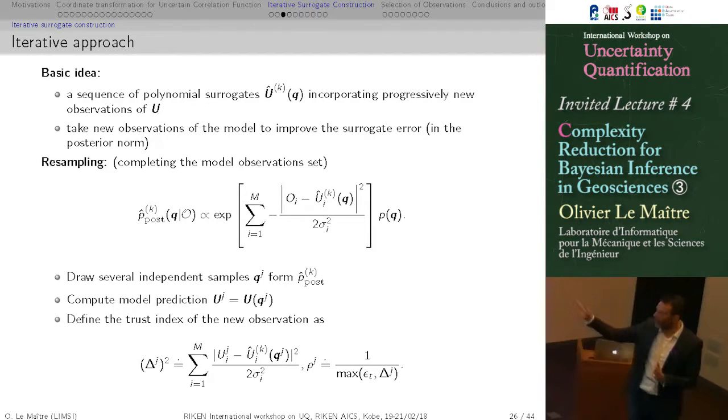And if what we actually compute is close to what we estimated with the surrogate, it means that in this area, the surrogate was quite good. So we can trust the point we draw with the surrogate. So the trust index will be close to 1, or will be large.